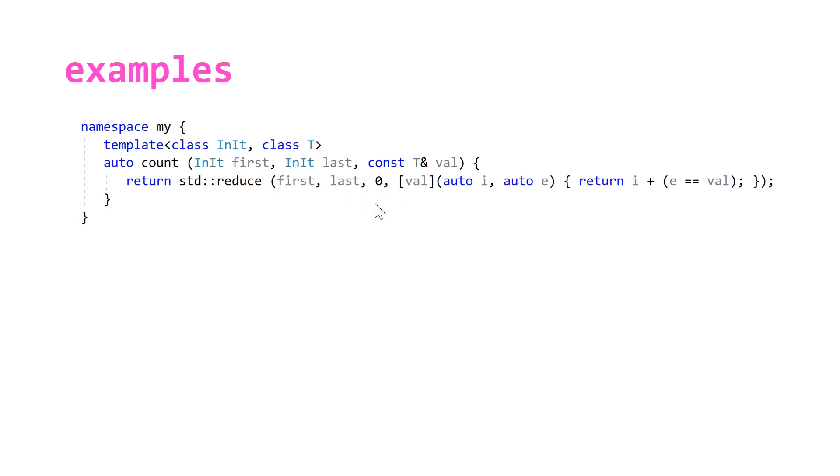iterators initializing the number that we want to return at zero and then just having this simple generic lambda that basically adds one whenever our element is equal to our value. I'm implementing count not count_if but count_if would look very similar and this is basically it.